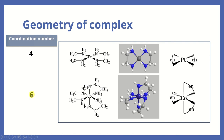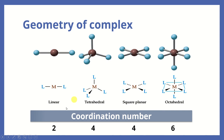If the coordination number is 6 with ethylenediamine as the ligand, it means we have three groups of ethylenediamine — one group, two groups, three groups. Each bidentate ligand makes two bonds, so in total we make six bonds, and these six bonds are arranged in the octahedral shape. So we can have coordination number 2, 4, or 6, with possible geometries of linear, tetrahedral or square planar, and octahedral.